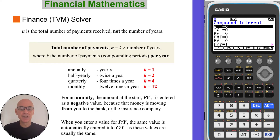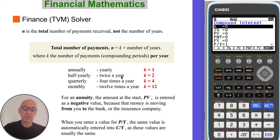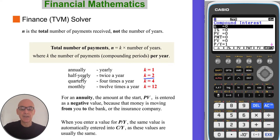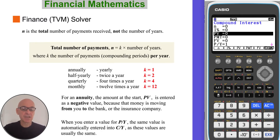To find the total number of payments N, multiply the number of years by K, where K is the number of payments or compounding periods per year. If interest is compounded annually (yearly), K equals 1. If compounded half-yearly (twice a year), K equals 2. If compounded quarterly (four times a year), K equals 4. If compounded monthly (twelve times a year), K equals 12. For an annuity, the starting amount PV is entered as a negative value because that money is moving from you to the bank or insurance company.